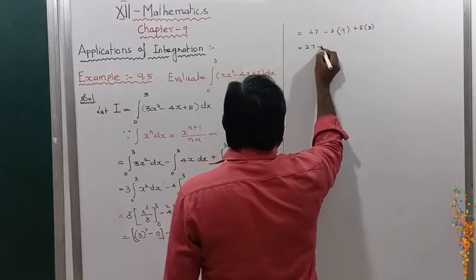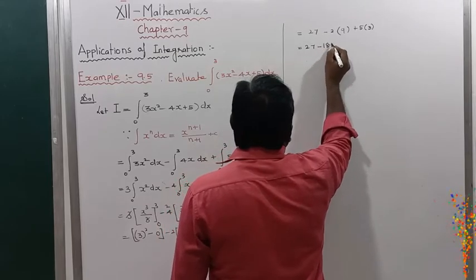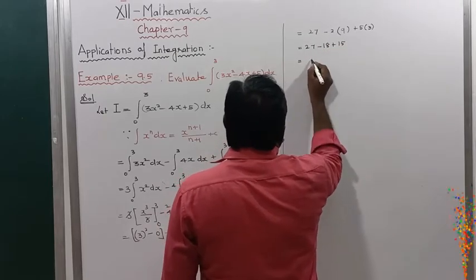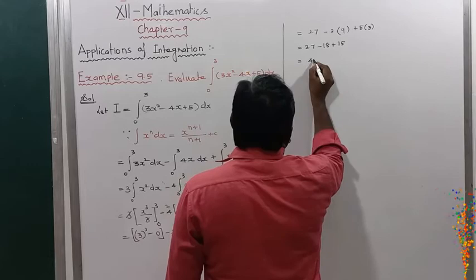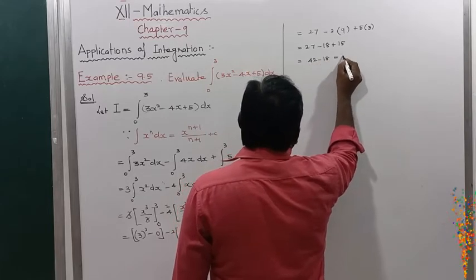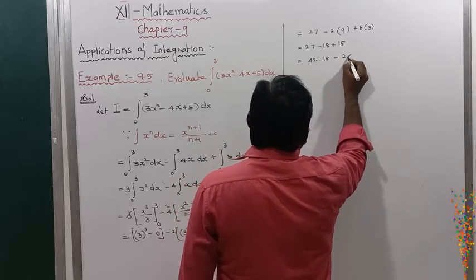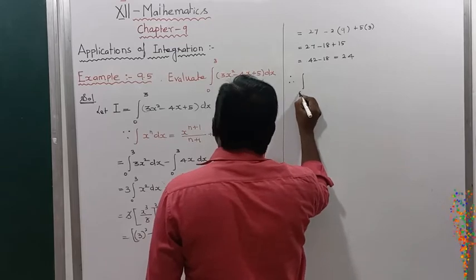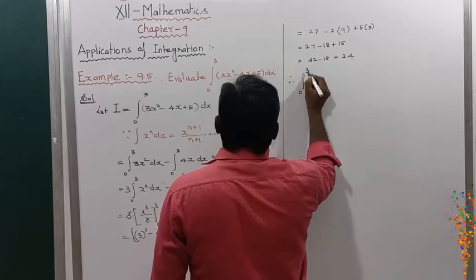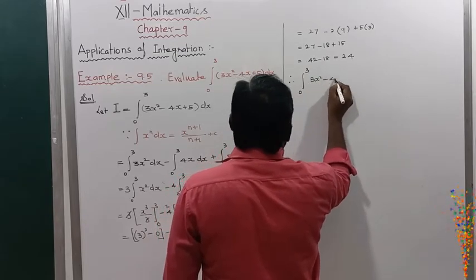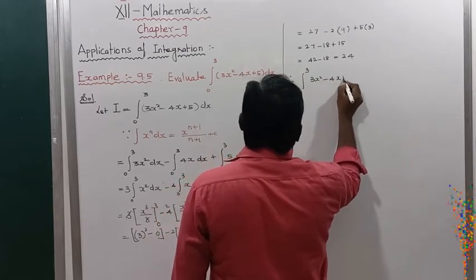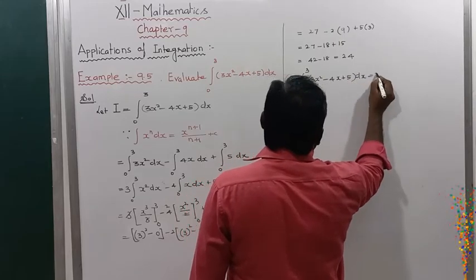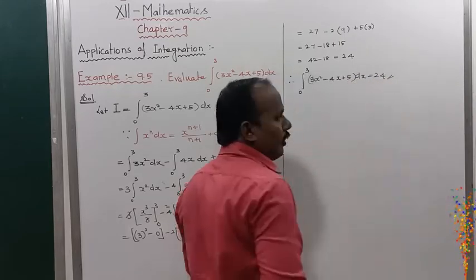So that is equal to 27 minus 18 plus 15, which equals 42 minus 18, equal to 24. Therefore, the integral from 0 to 3 of (3x² - 4x + 5) dx is equal to 24.